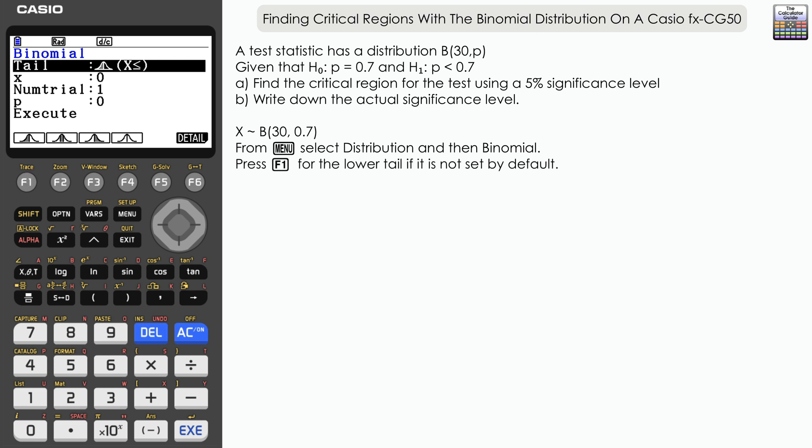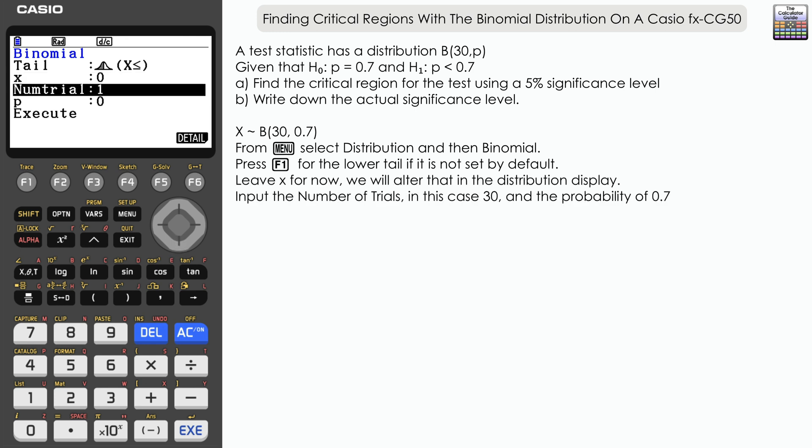If you have something other than the lower tail, press F1 at this stage, then we are set up ready for a lower-tailed test. Now scrolling down, x I'm just going to leave as 0 or default. We're actually going to alter that once we get the distribution displayed.